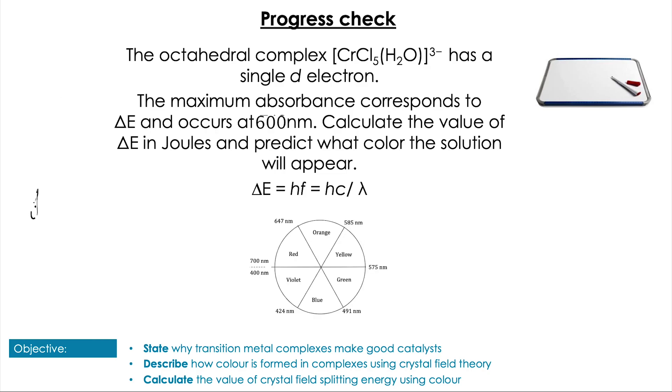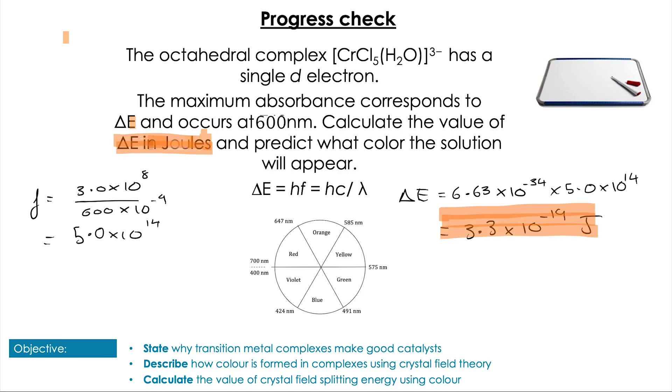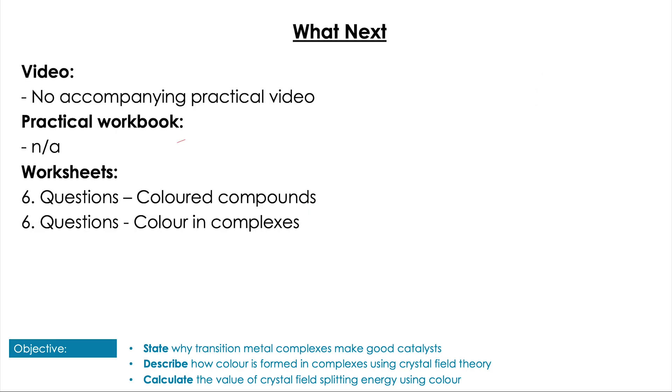Pop them up! Firstly, we're going to calculate our frequency by dividing our speed of light by our wavelength in meters, not in nanometers, which gives us 5.0 times 10 to the 14. We can then calculate delta E by multiplying that value by Planck's constant, and that gives us our value of delta E, which is 3.3 times 10 to the minus 19 joules. Now predicting what color the solution will appear: it absorbs at 600, right in the middle of the orange region, so we would expect this to appear right in the middle of the blue region.